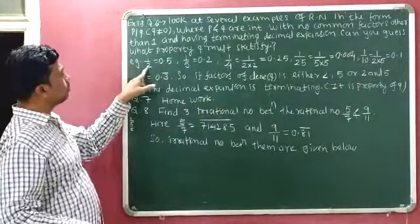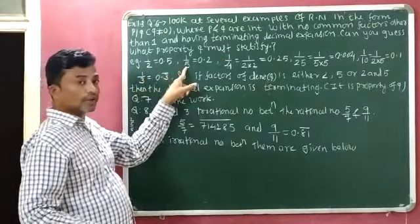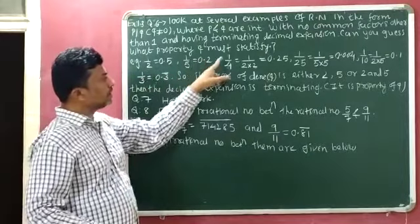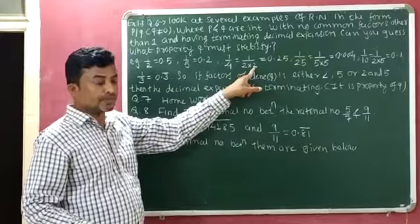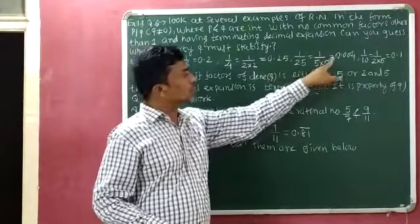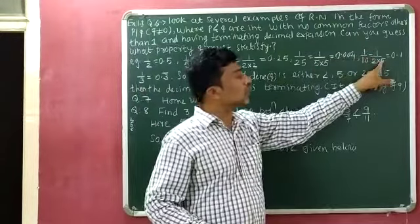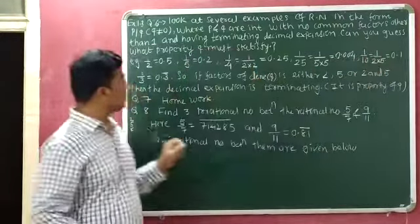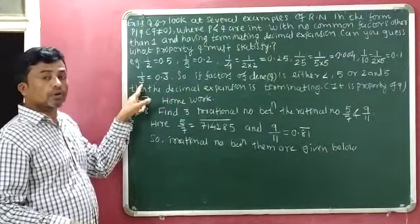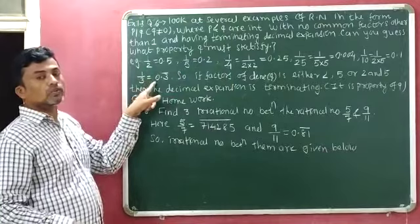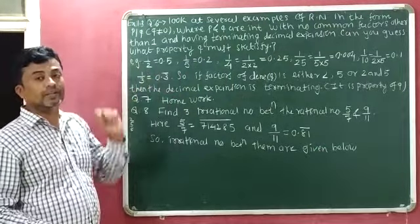Here Q equals 2 — answer is terminating. Here Q equals 5 — answer is terminating. Here Q equals 2 × 2 — answer is terminating. Here Q equals 5 × 5 — answer is terminating. Here Q equals 2 × 5 — answer is terminating. But here Q is not 2, or 5, or both 2 and 5, so the answer is non-terminating recurring.